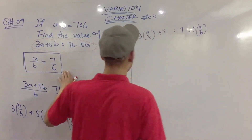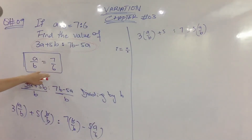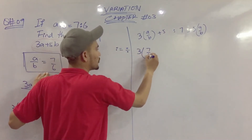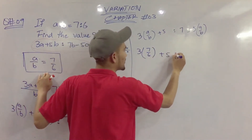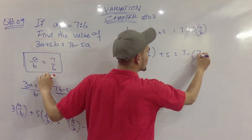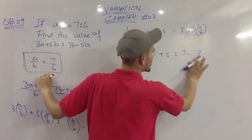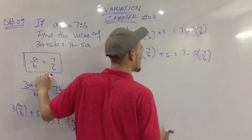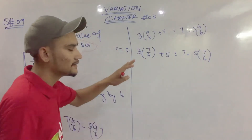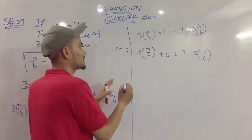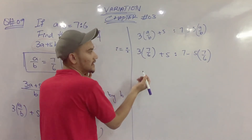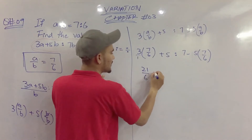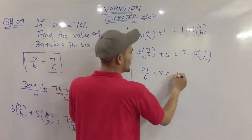Now a divided by b equals 7 divided by 6. We substitute 7 divided by 6 into the expression: 3 times 7 divided by 6, plus 5, in ratio with 7 minus 5 times 7 divided by 6.